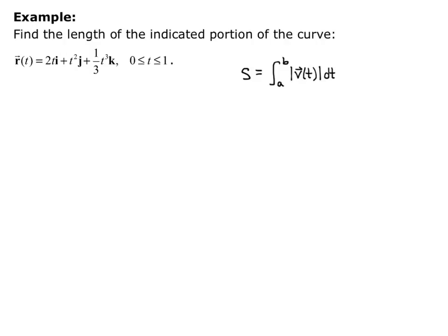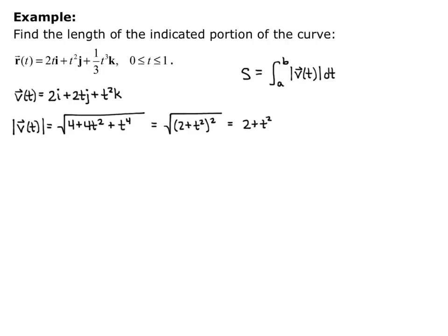Remember we want arc length s equals the integral from a to b of the magnitude of velocity times dt. So velocity is the derivative of position, so 2i plus 2t j plus t squared k is my velocity, and the magnitude of velocity is the square root of 4 plus 4t squared plus t to the fourth. That factors into the square root of quantity 2 plus t squared quantity squared, and then the square root and square cancel out to give us 2 plus t squared. So that's my magnitude of velocity, 2 plus t squared.